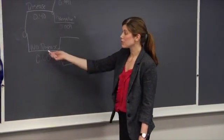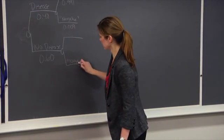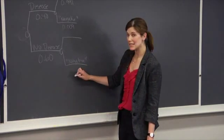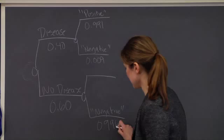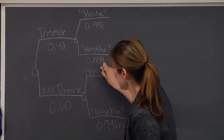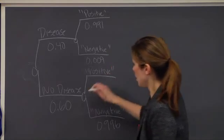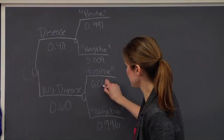In patients who don't have the disease, the probability of a negative test is known as the specificity, and this is 0.996. Then similarly, the probability of a positive test among these patients is 1 minus this, which is 0.004.